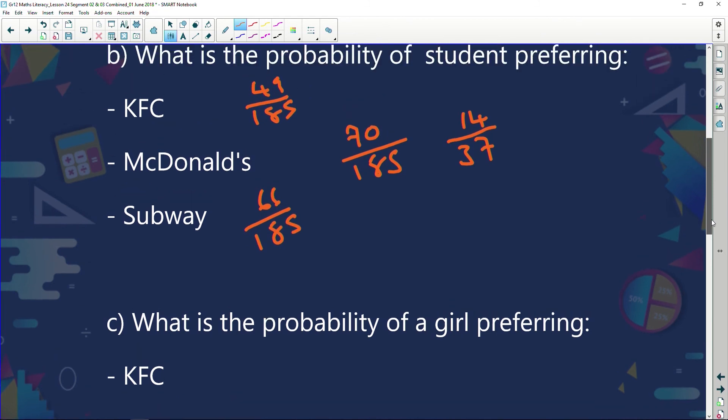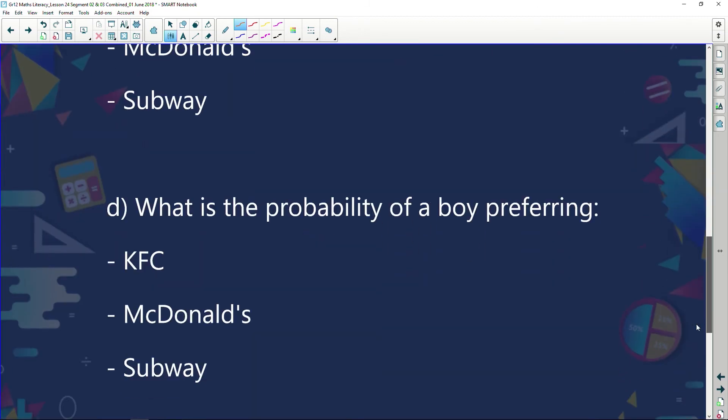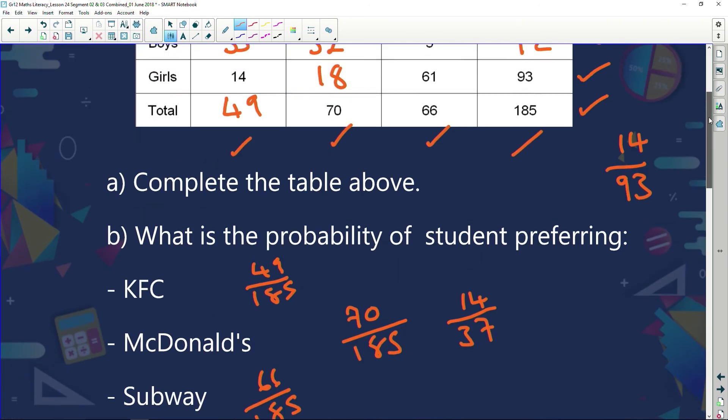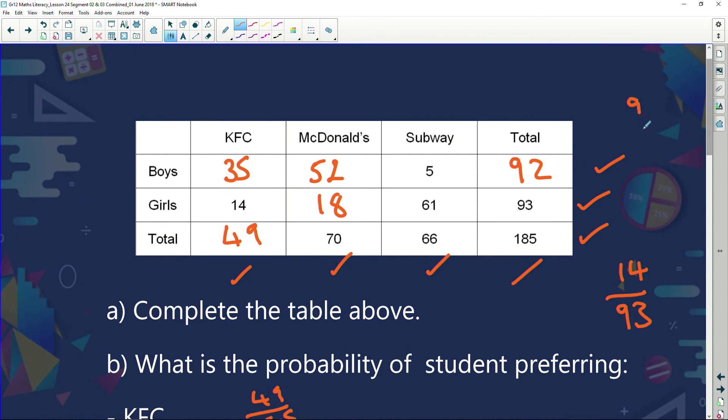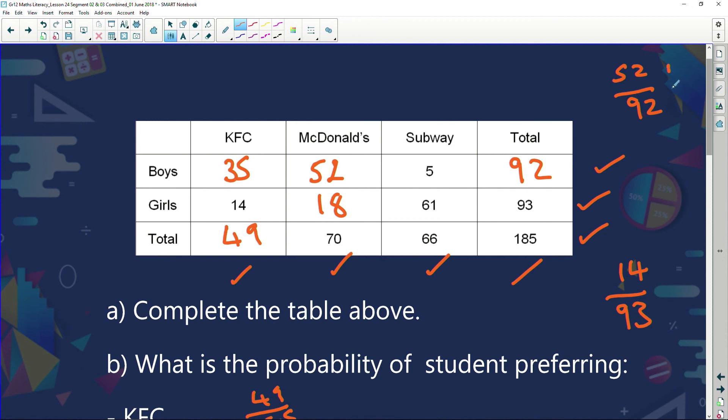Now, what is the probability of a girl preferring KFC? Girls who prefer KFC—so there are a total of 93 girls. How many of them like KFC? 14, so you've got a 14 in 93 chance of a girl preferring KFC. Let's have a look. We're skipping a few questions. What's the probability of a boy preferring McDonald's? Let's have a look. All our boys, we've got 92 boys. How many of them like McDonald's? 52 of them. And then we need to simplify it again. So I'm going to say 52 over possible 92 leaves me with 13 over 23. So it simplifies to 13 over 23.